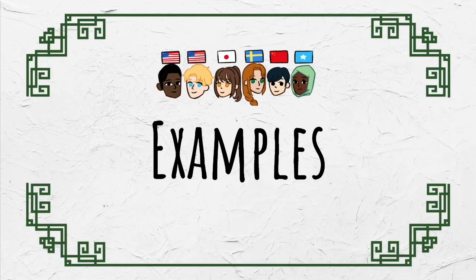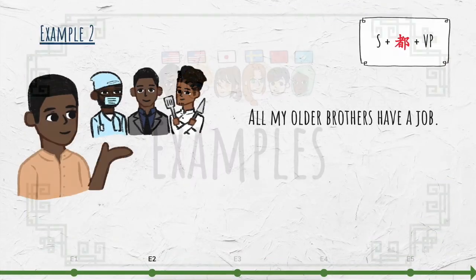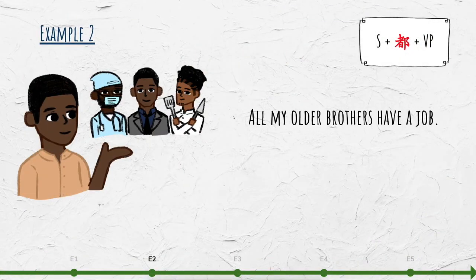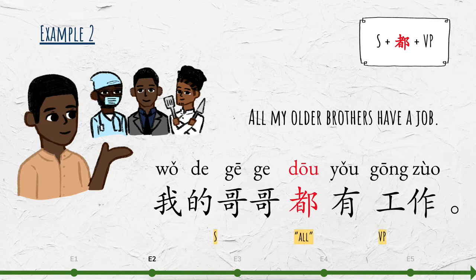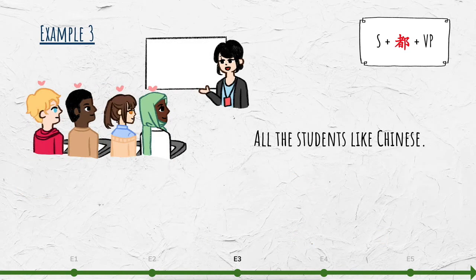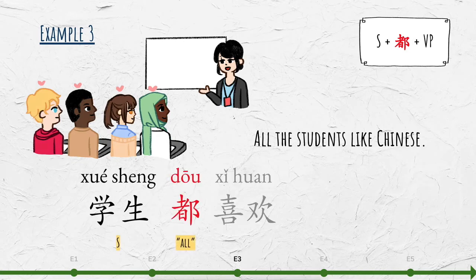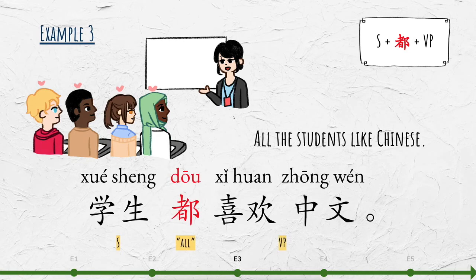Here are some more examples. 'All my older brothers have a job': 我的哥哥都有工作。'All the students like Chinese': 学生都喜欢中文。